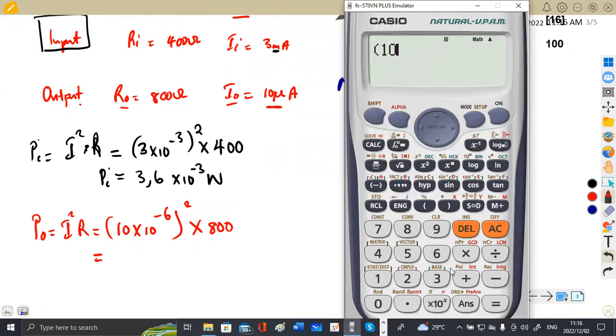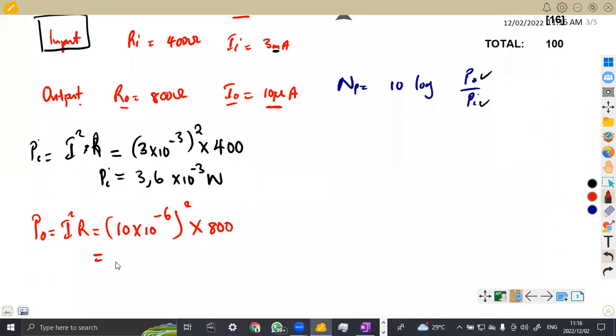Let's insert our values: 10 times 10 to the power of minus 6, whatever that we get here, we are supposed to square it, then we multiply by 800. We are going to obtain 8 times 10 to the power of minus 8. So that is 8 times 10 to the power of minus 8 watts. This is our P out.